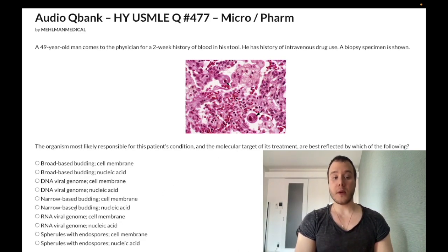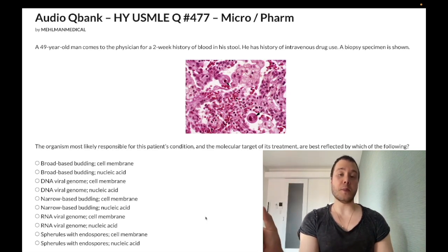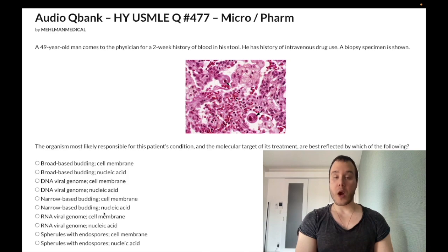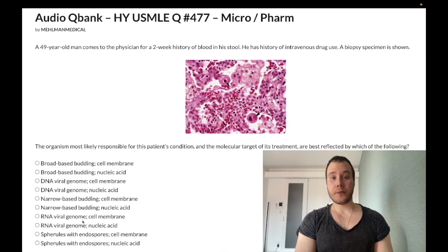Narrow-base budding — wrong answer. This refers to Cryptococcus neoformans meningitis, treated with amphotericin B, which targets the ergosterol cell membrane. So that answer choice corresponds to Cryptococcus neoformans meningitis with amphotericin B.